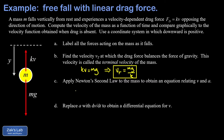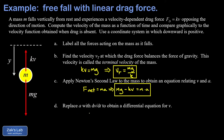Next, in part c, we apply Newton's second law to this mass to obtain an equation relating velocity and acceleration. We apply F_net = ma, and since downward is positive, mg is positive and minus kv points in the negative direction. That gives us mg minus kv equals mass times acceleration. Then in part d we replace the acceleration with the time derivative of velocity dv/dt to obtain a differential equation in v.